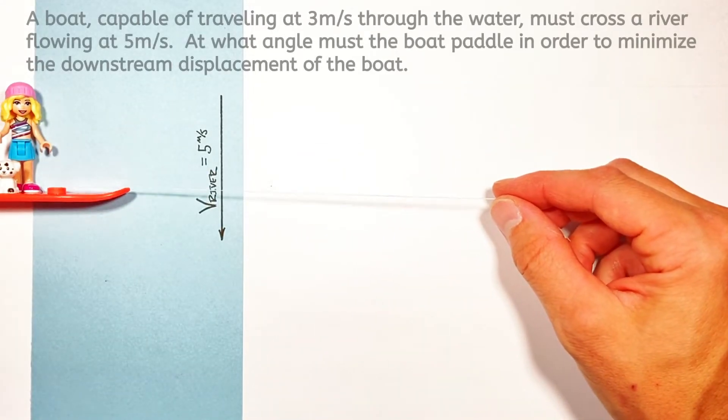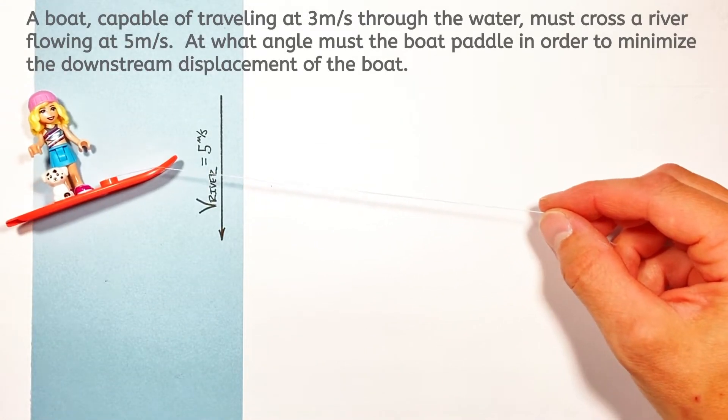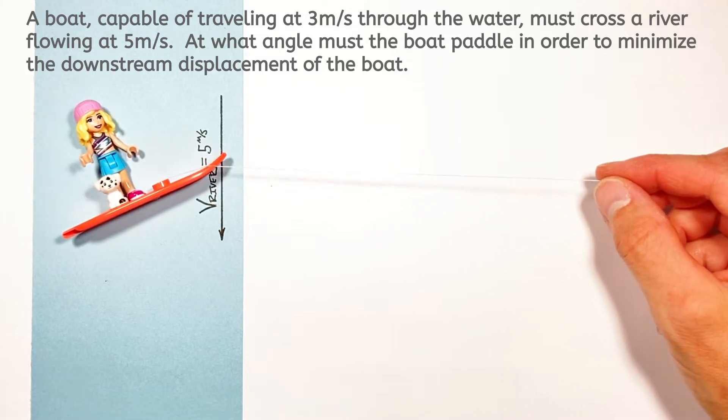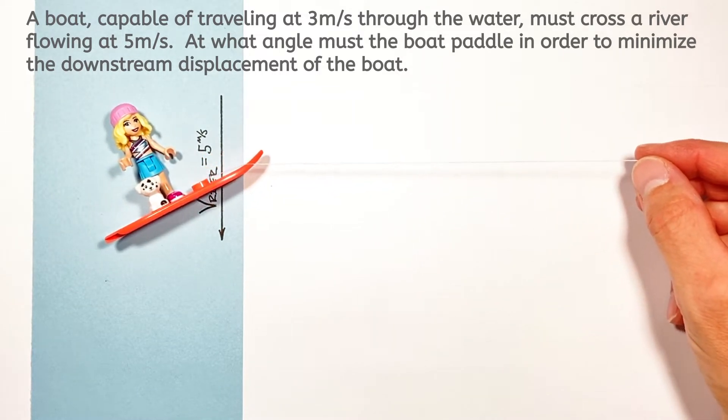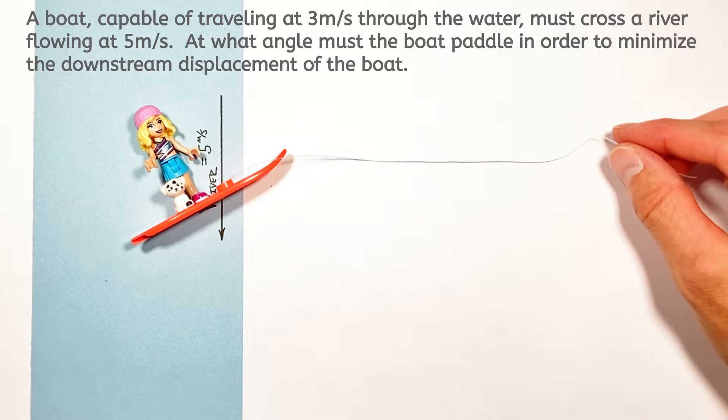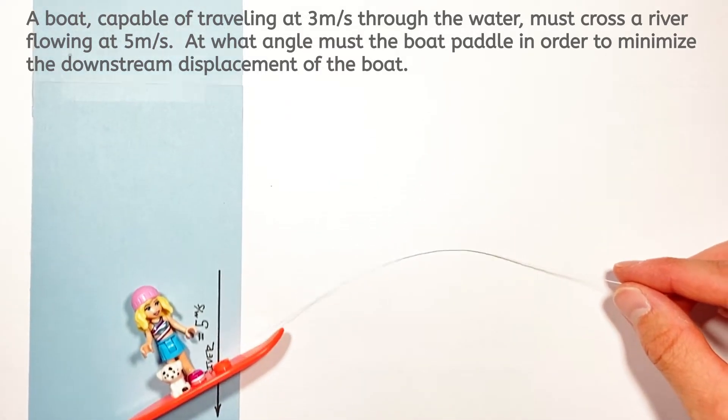Alright kids, today we're back with another boat across the river problem. Now the issue in this problem is that the boat is going to travel through the water more slowly than the water is flowing downstream.